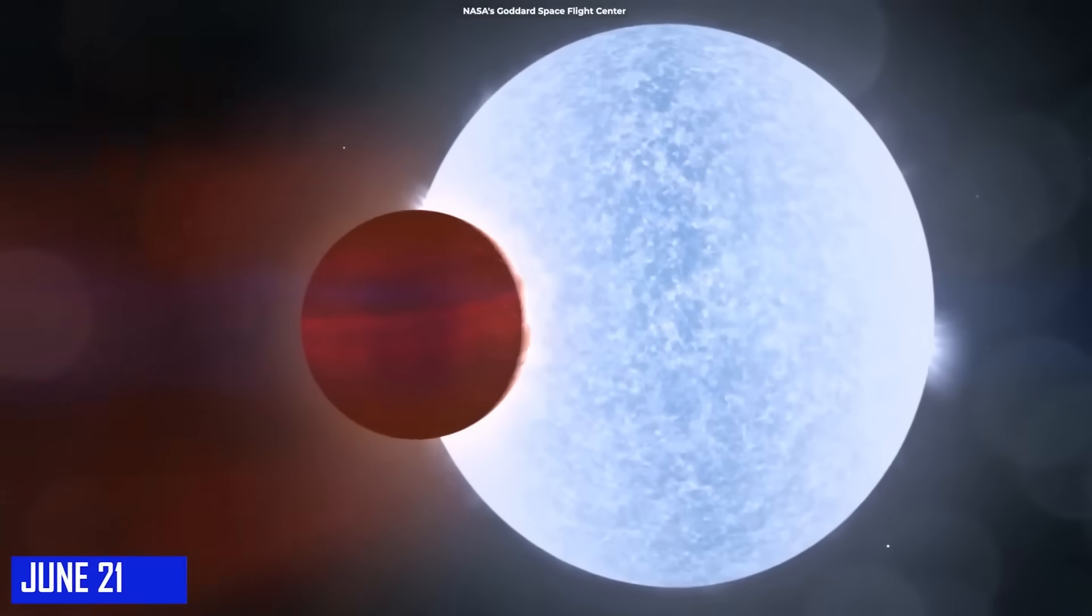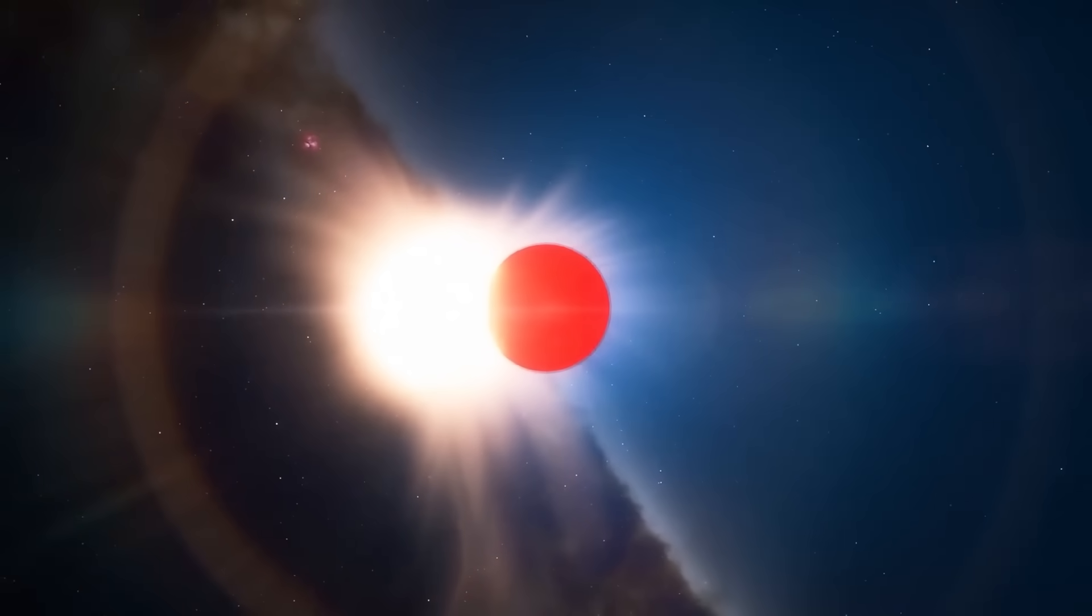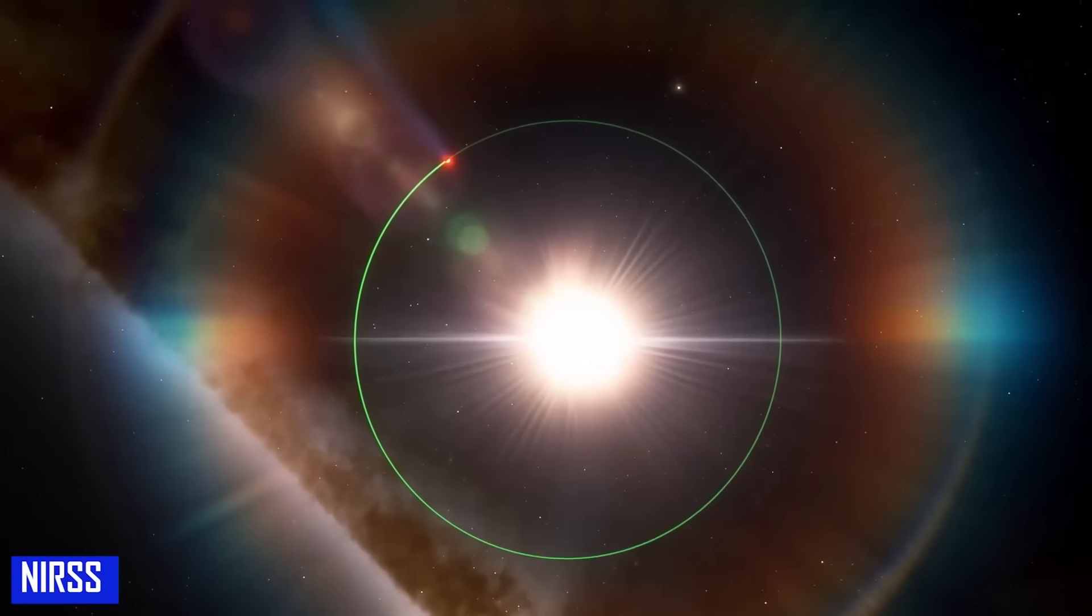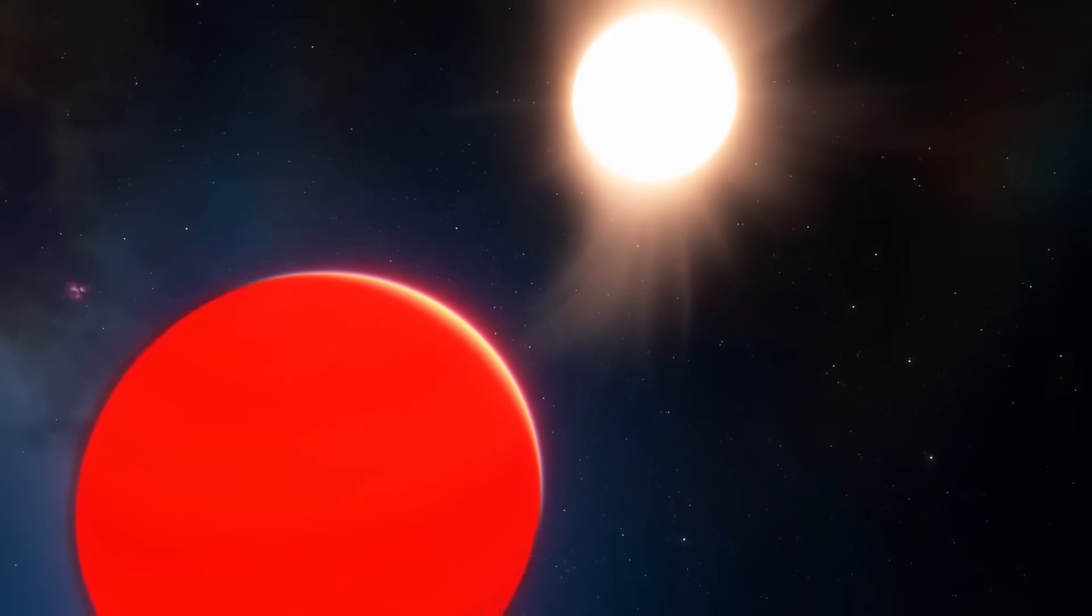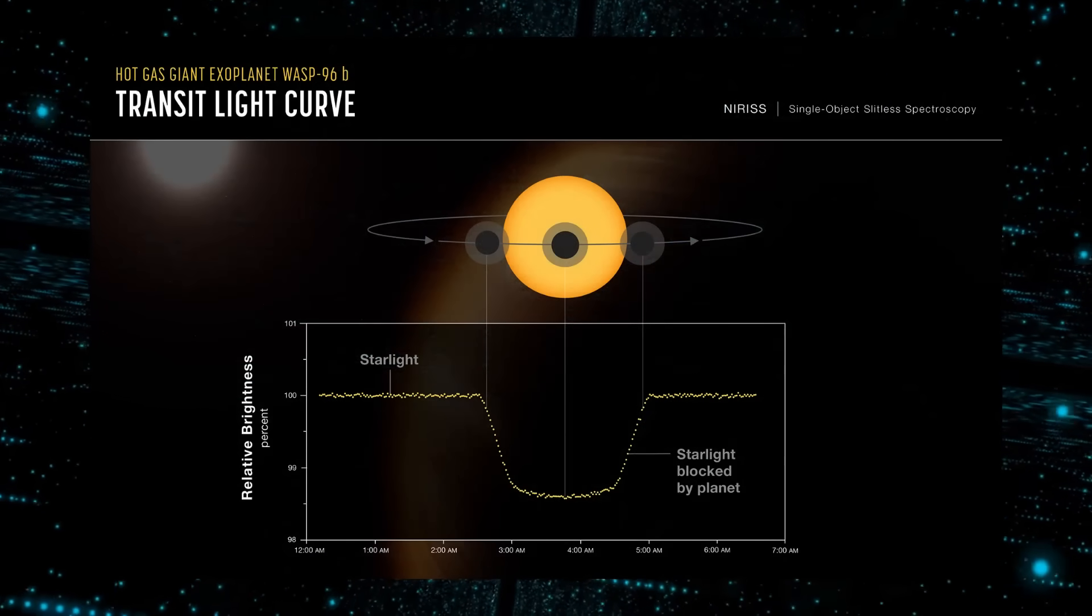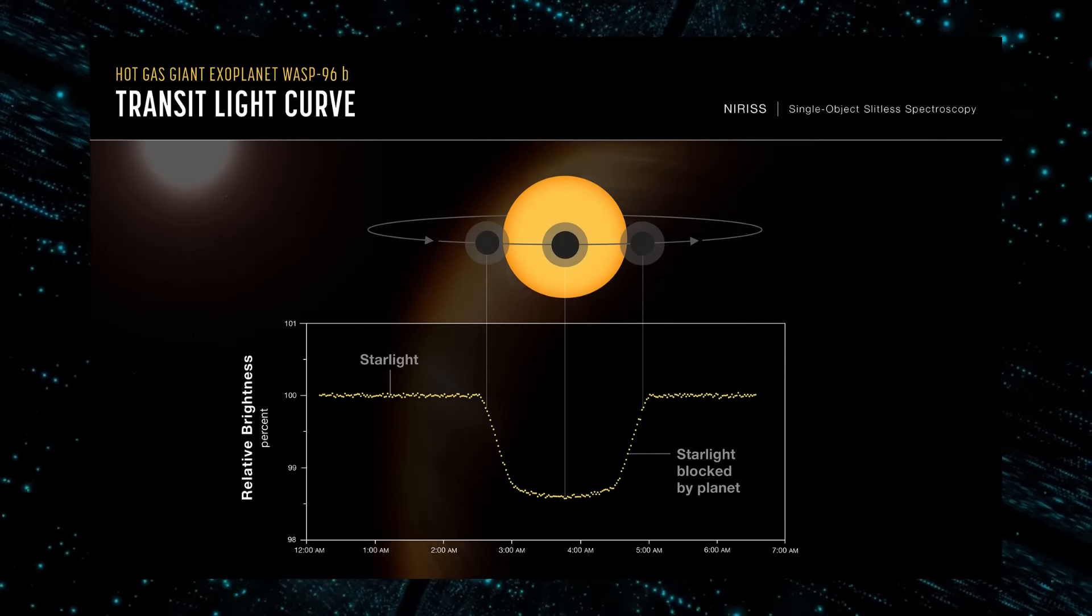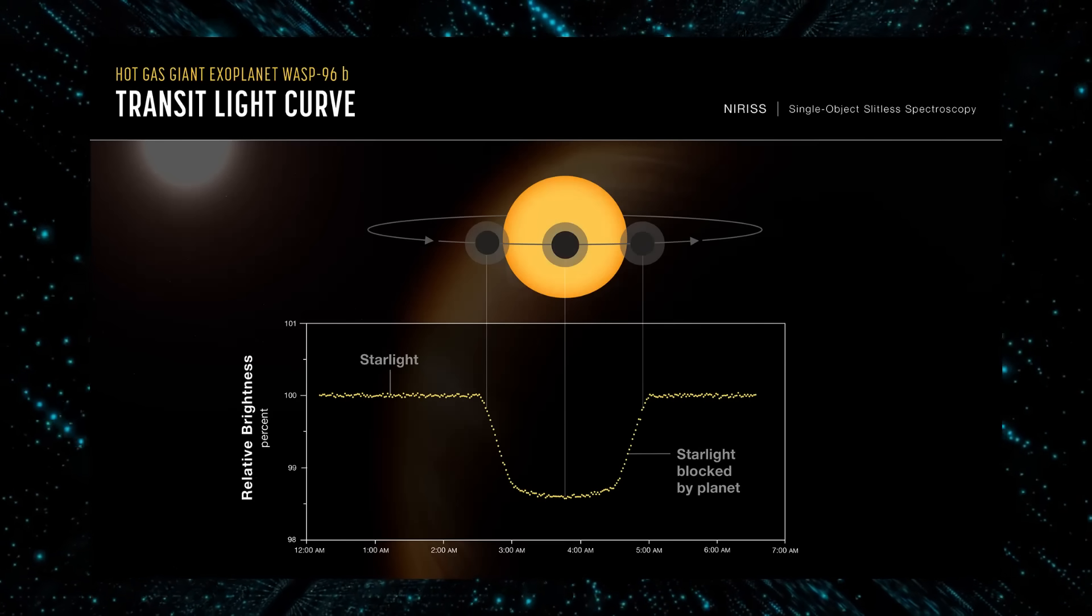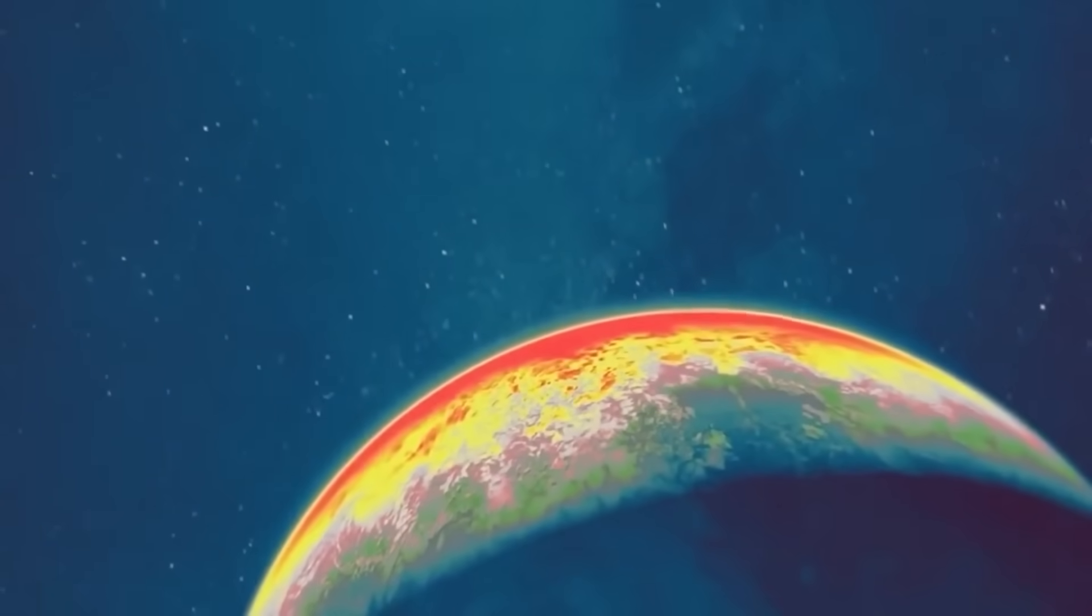On June 21, the WASP-96 system was observed by Webb's near-infrared imagery and slitless spectrograph. The NIRISS observed for 6.4 hours as the planet moved across the star. The end result is a light curve that depicts the overall dimming of starlight during the transit and a transmission spectrum that shows the brightness variation of specific infrared light wavelengths between 0.6 and 2.8 microns.